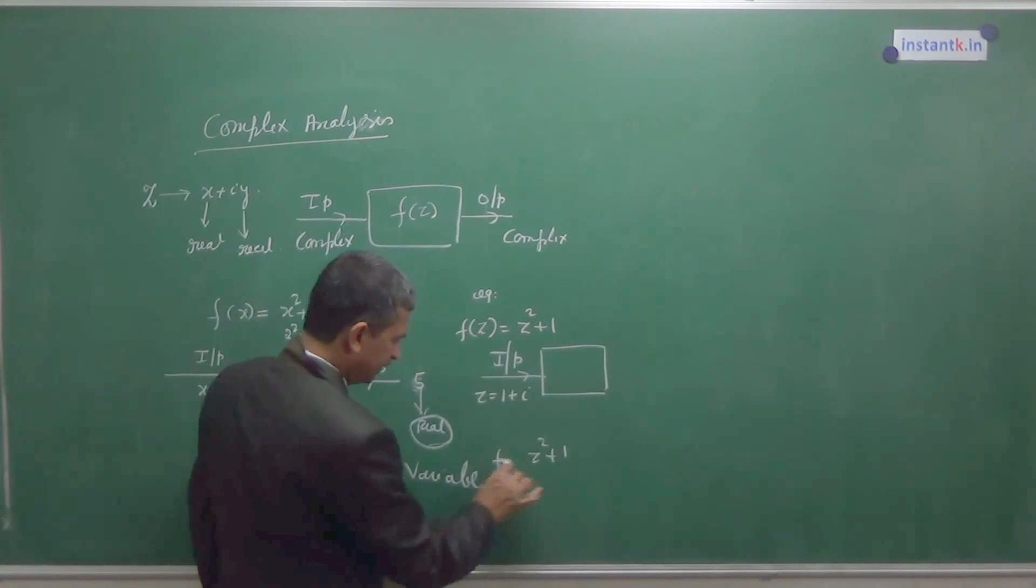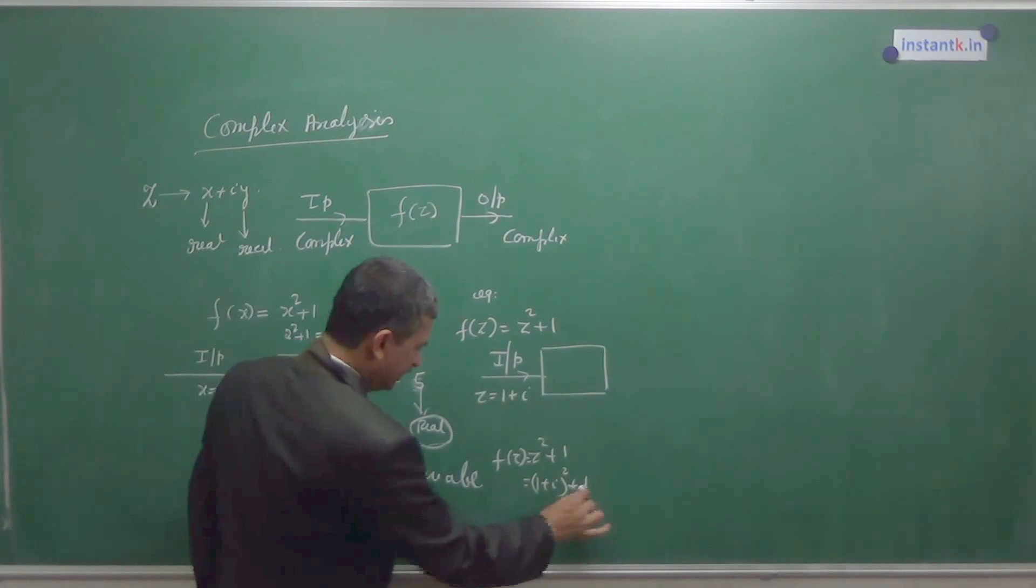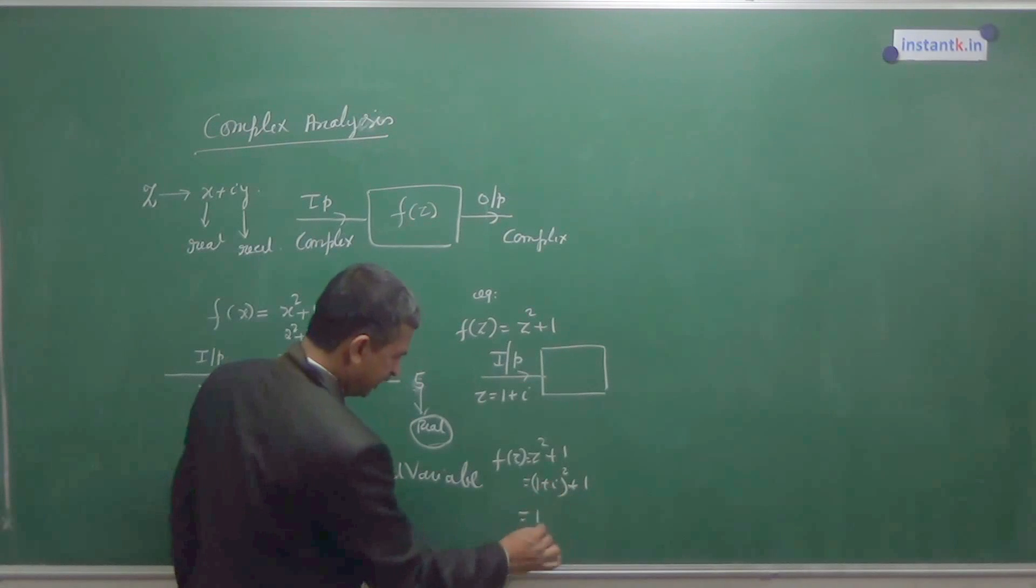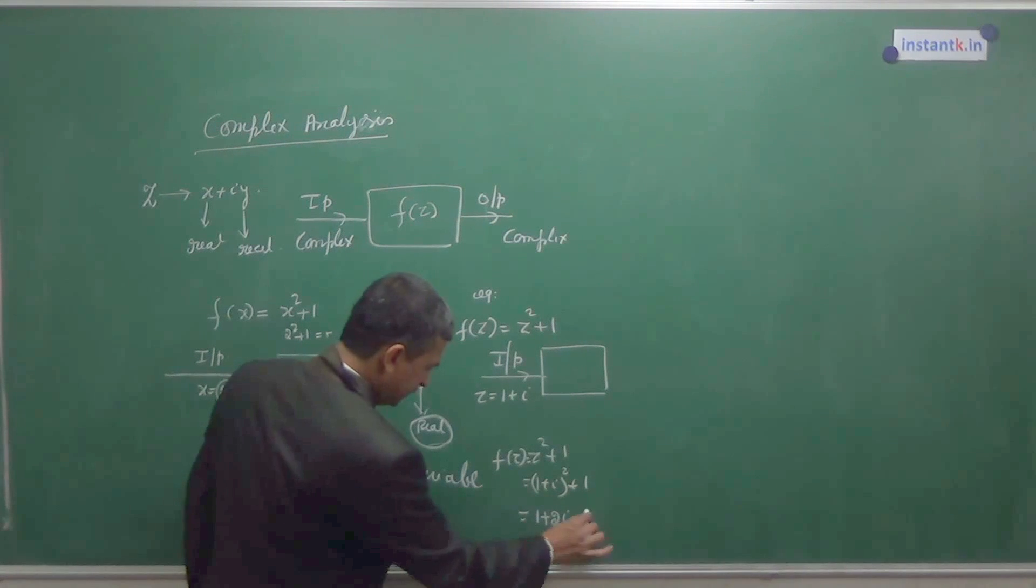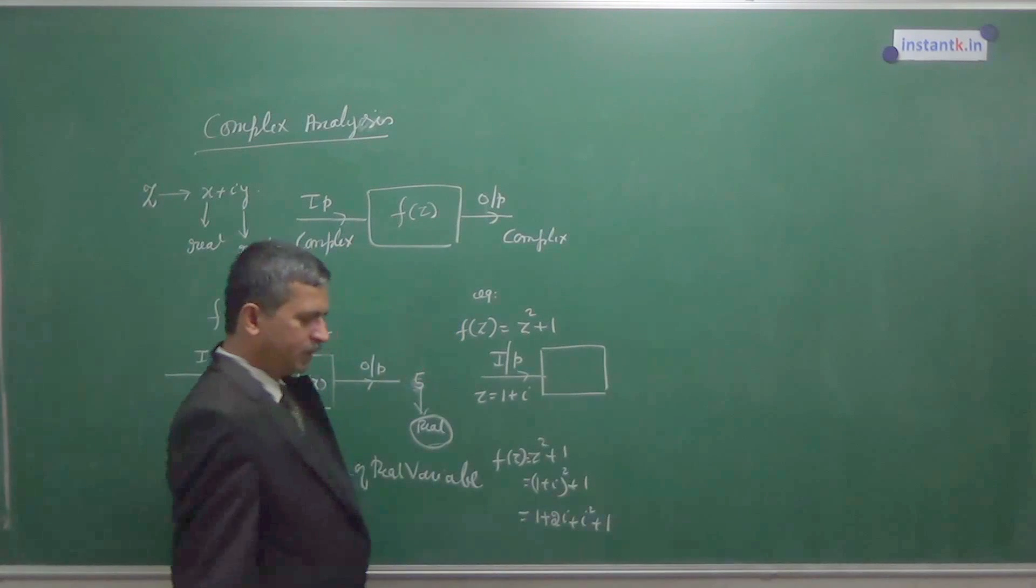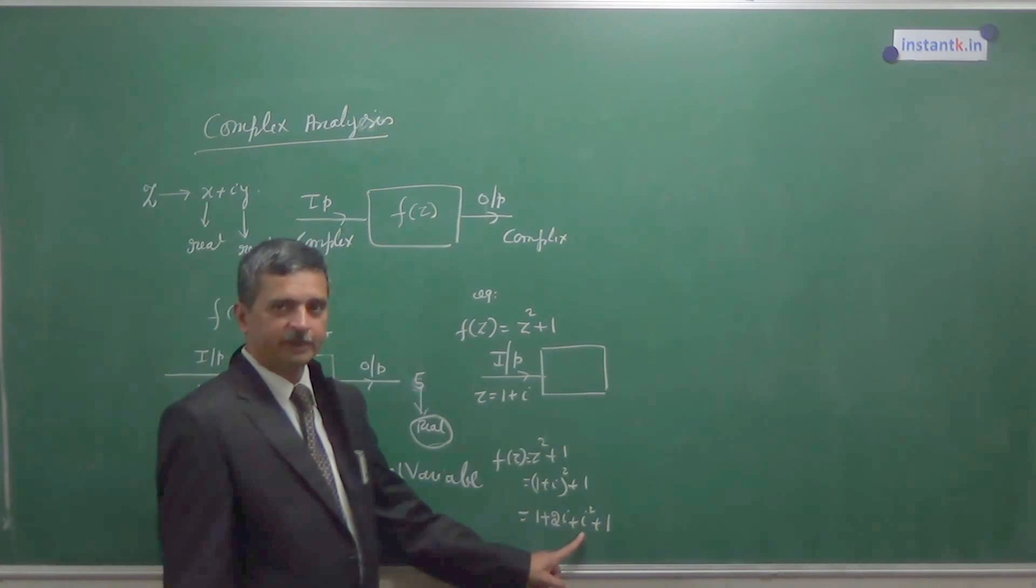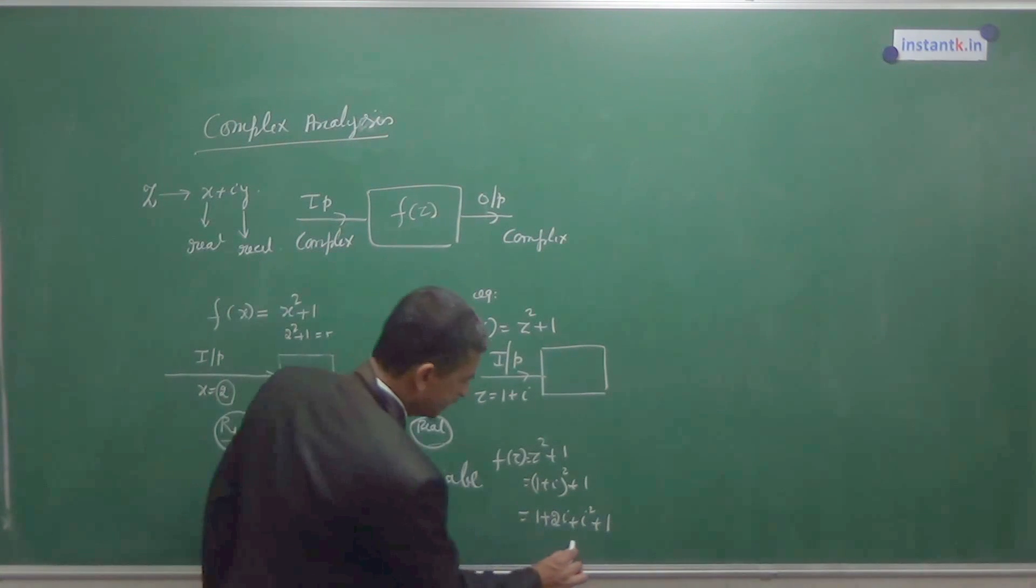So now substitute here. Z square plus 1. I am taking now that as 1 plus i. 1 plus i square plus 1. So this is a plus b whole square. A square plus 2ab plus b square plus 1. i is nothing but root of minus 1. i square is minus 1.